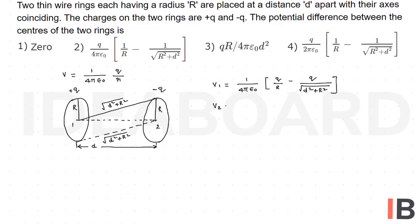Similarly, potential due to the second ring, V₂ is equal to 1 by 4πε₀ into, here the charge is q by √(d² + r²). This is minus q by r.